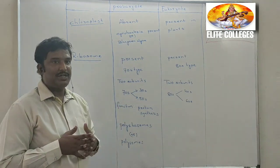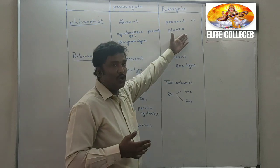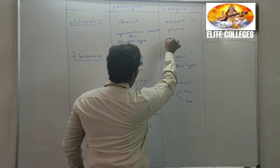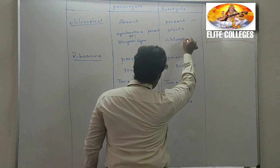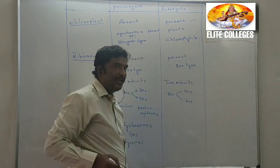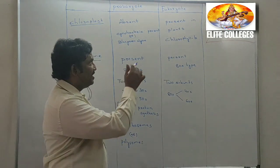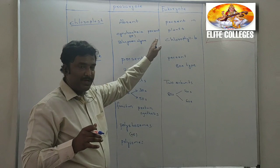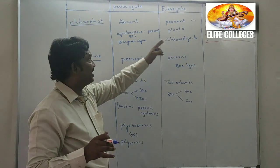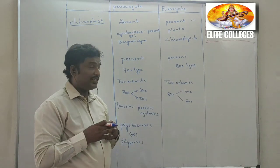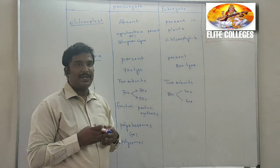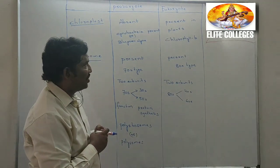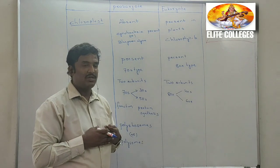Photosynthesis is the major event taking place in plants, which is why plants have chloroplasts. Inside the chloroplast, a specific pigment is present called chlorophyll. Chlorophyll is the chief pigment present inside the leaves of the plant — because of this, leaves appear green in color. Within the chloroplast, the chlorophyll pigments are located in structures called grana.